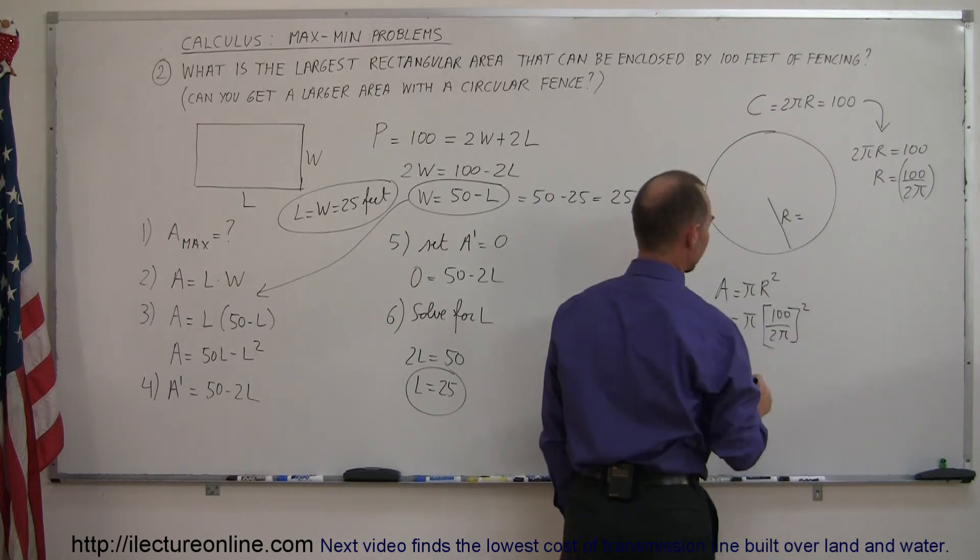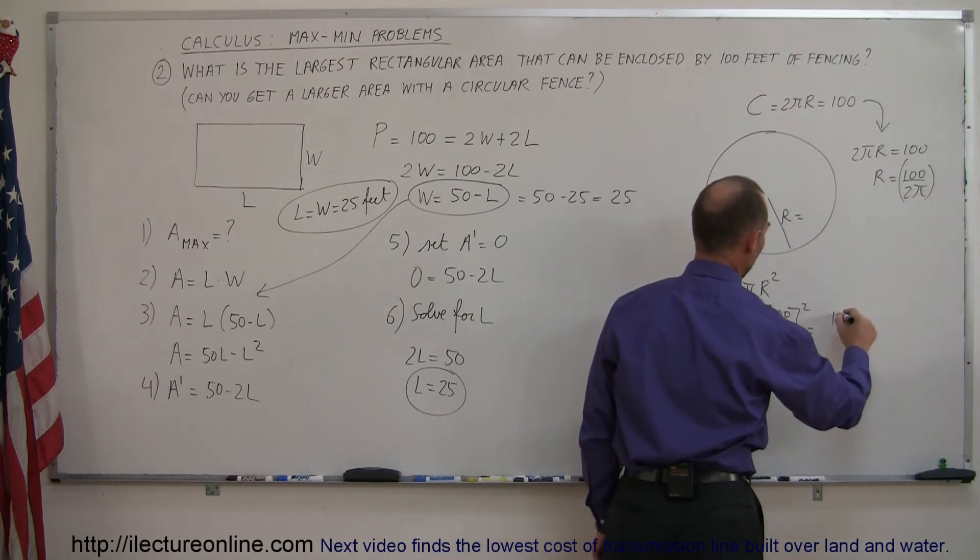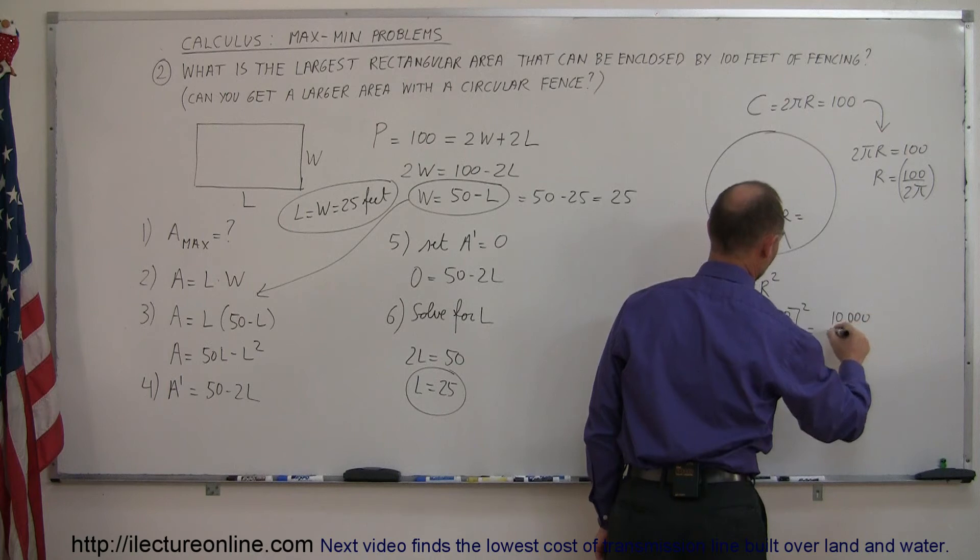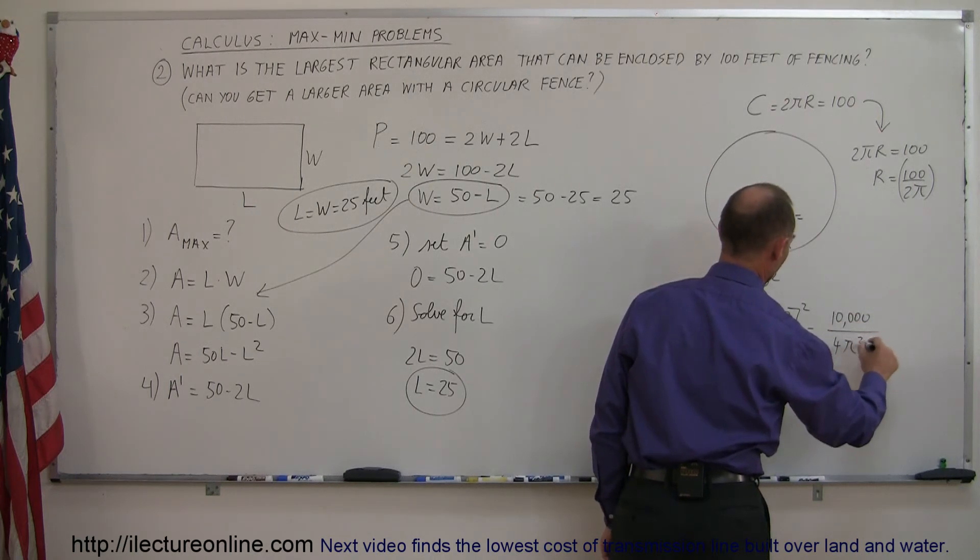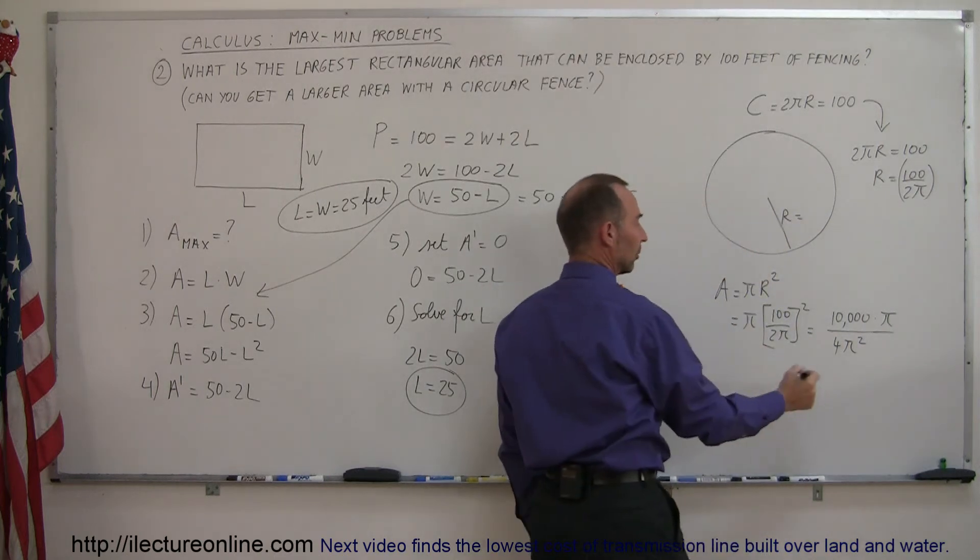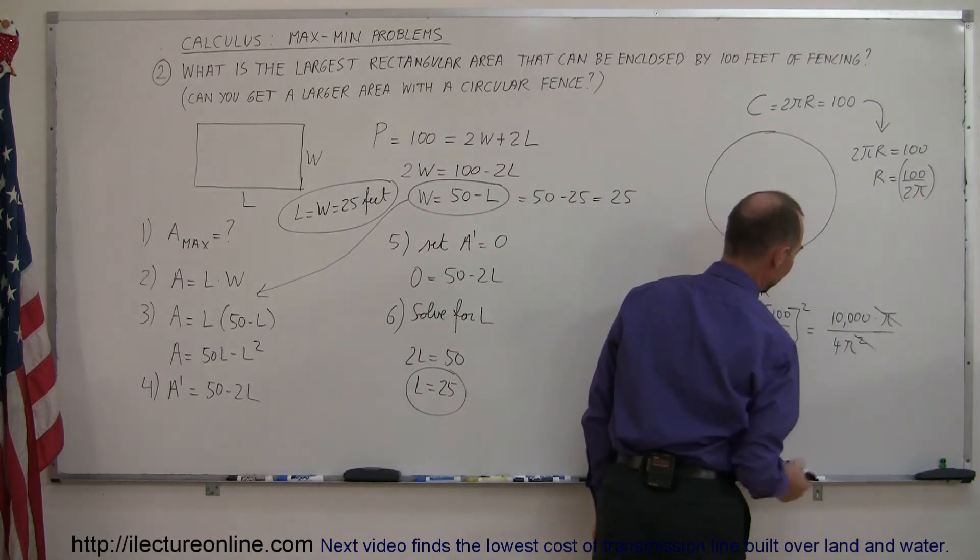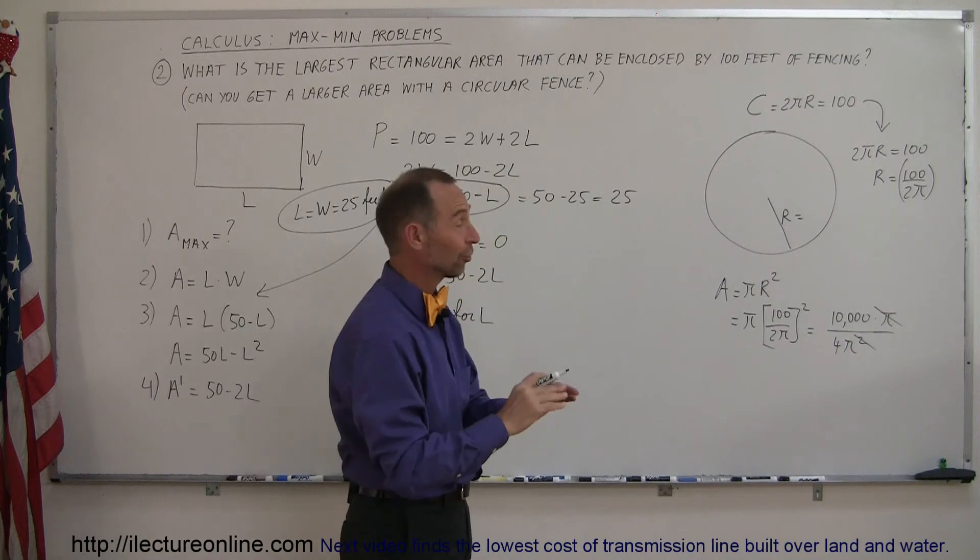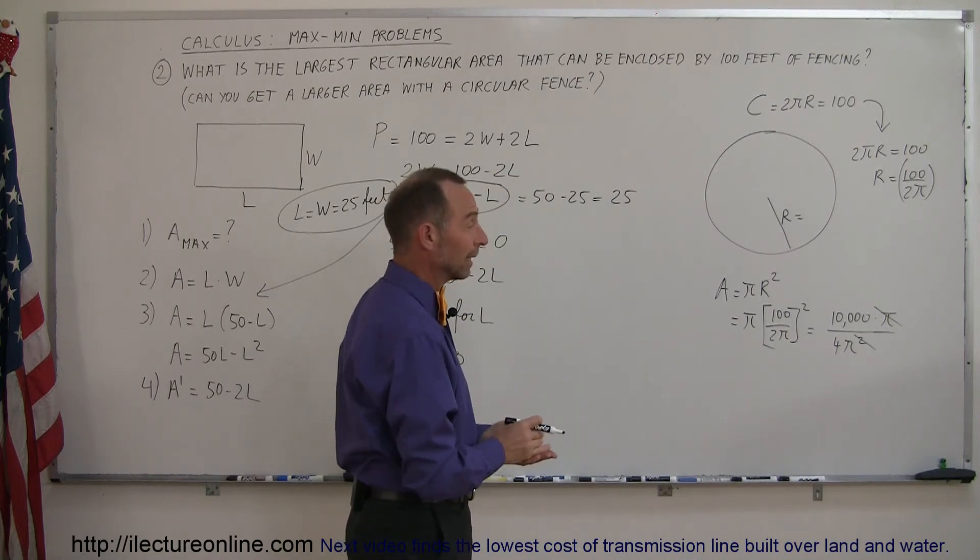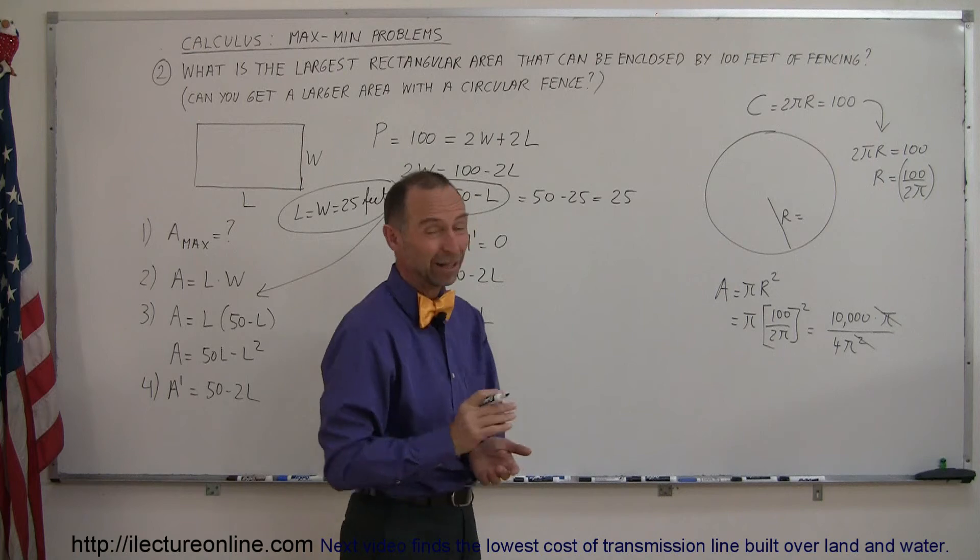So this would be pi times r, which is 100 divided by 2 pi, and we have to square that. So this is equal to 10,000 divided by 4 pi squared, and then we have still a pi in the numerator from here. So then this pi cancels out that pi, and so the area, if we make it into a circular region,